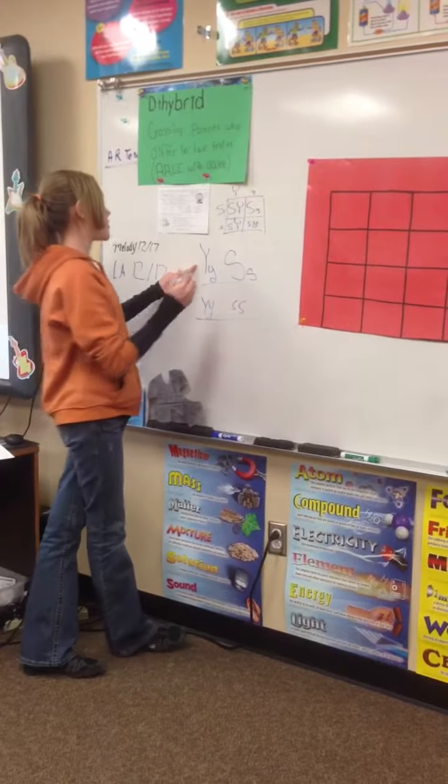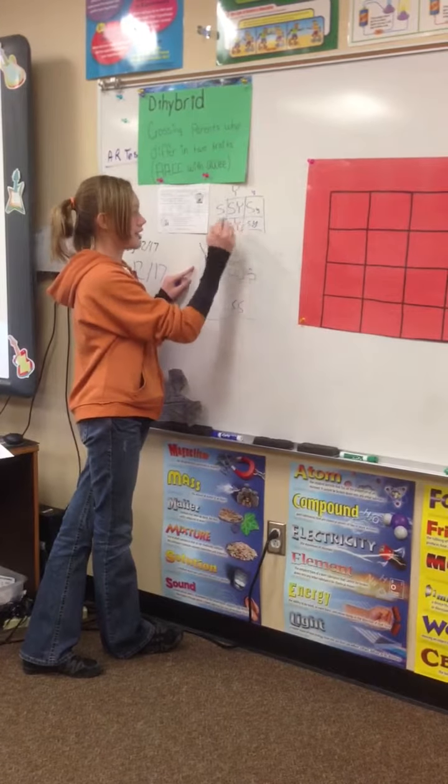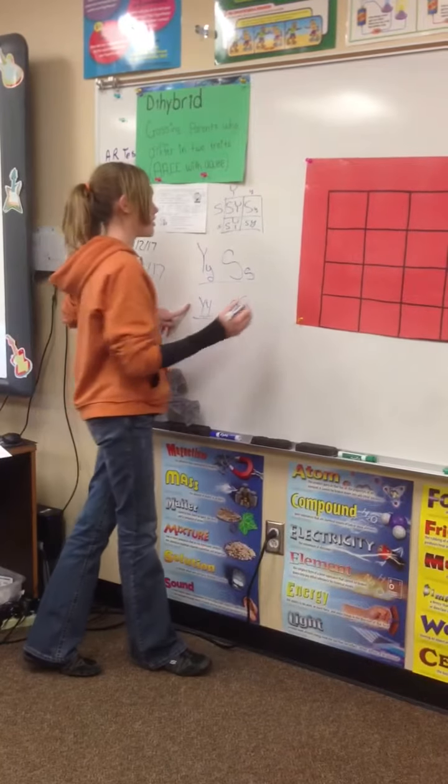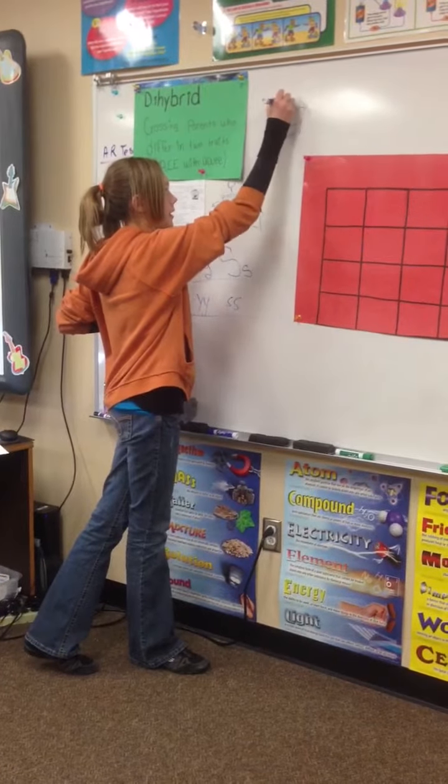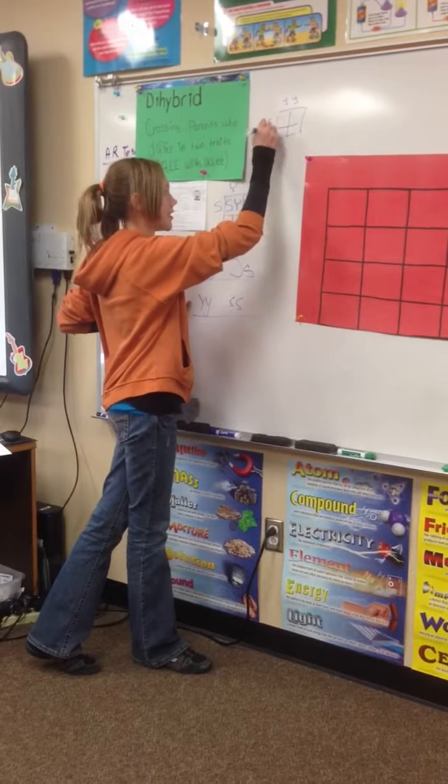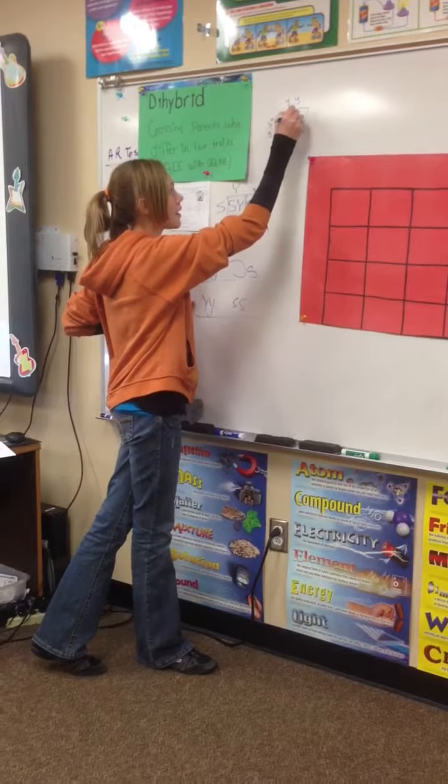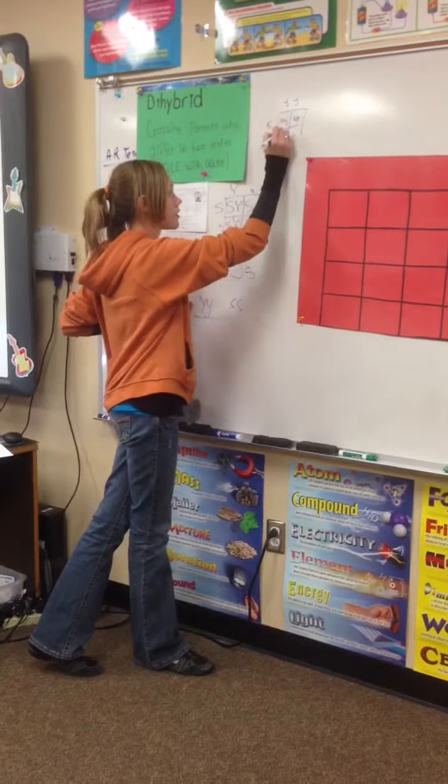So his possible gametes are these four right here. And SpongeSusie's are little y, little y, and little s, little s. So this is little s, little y all throughout the four squares.